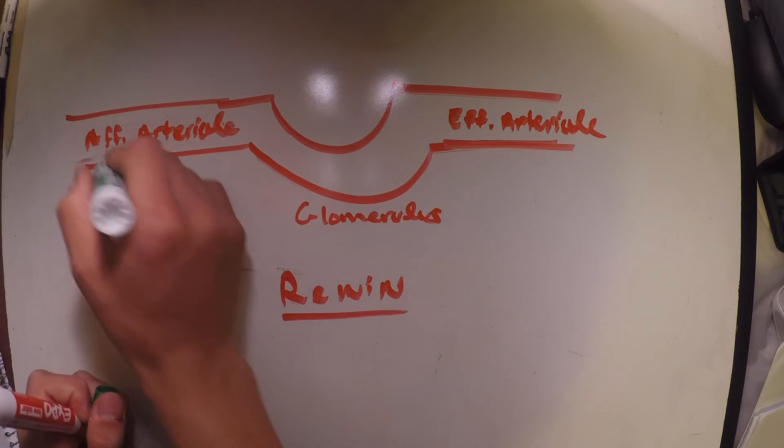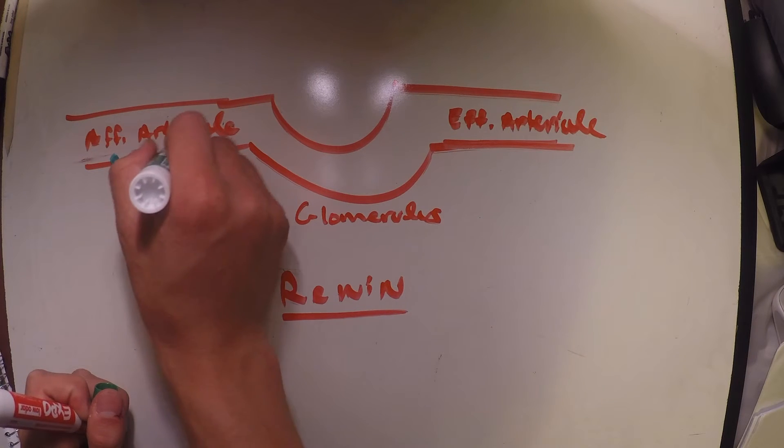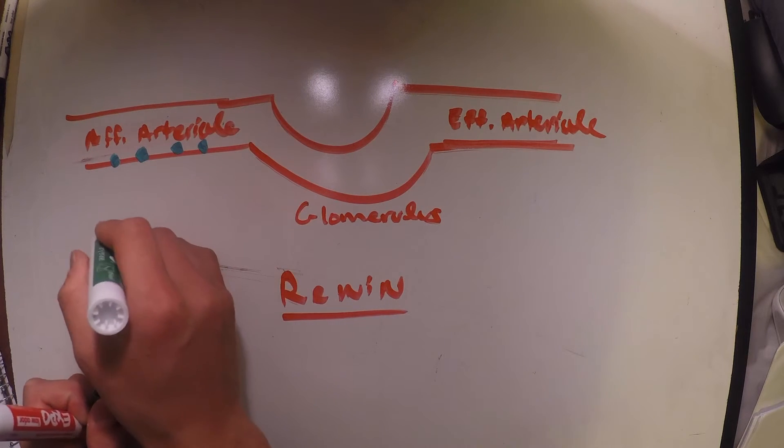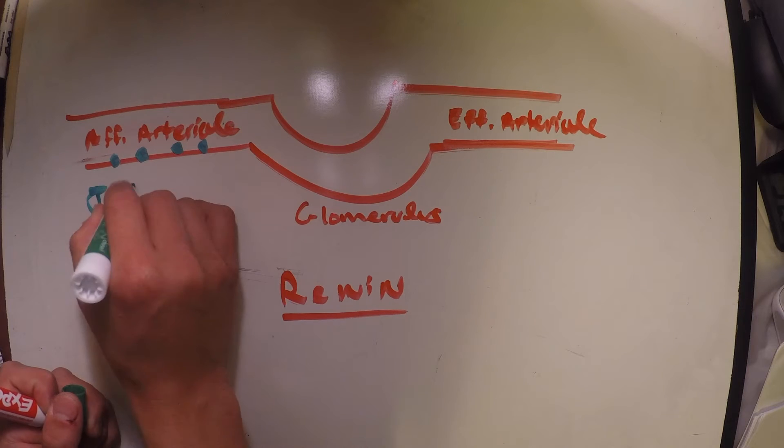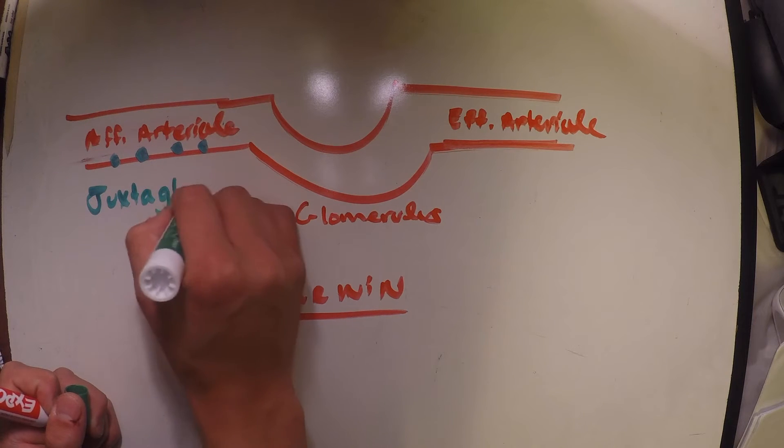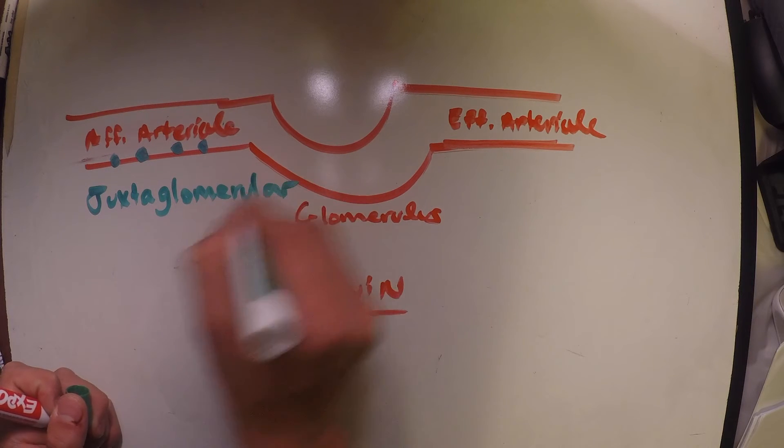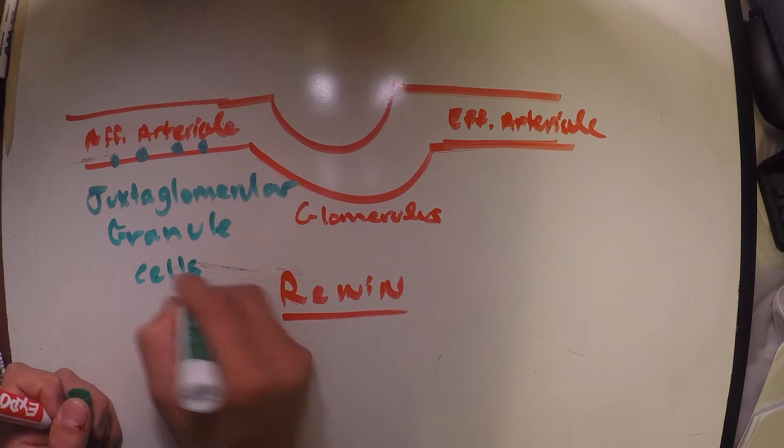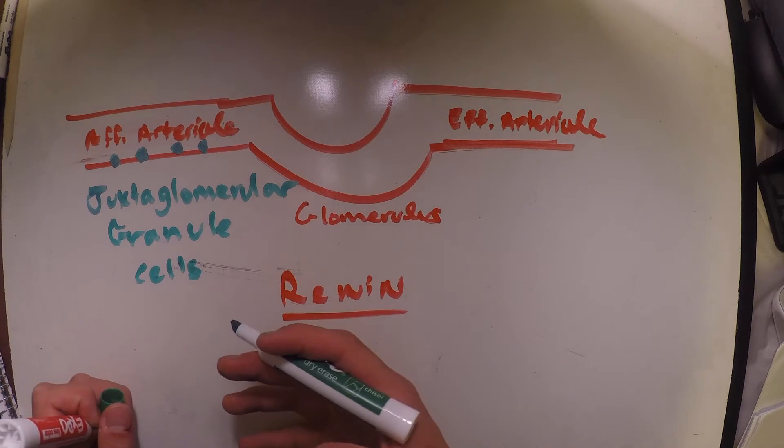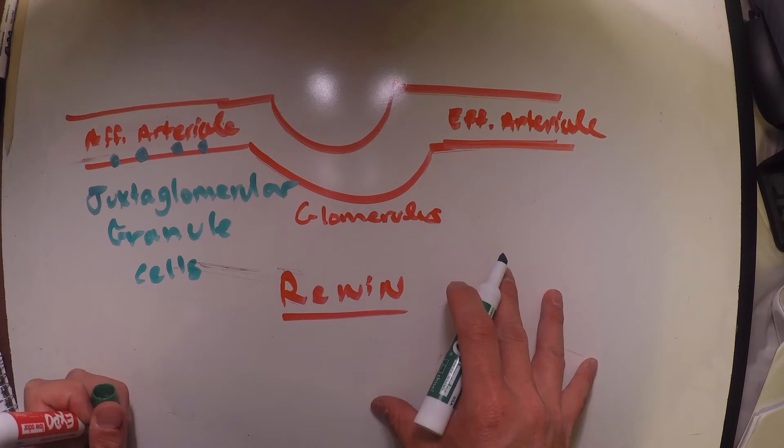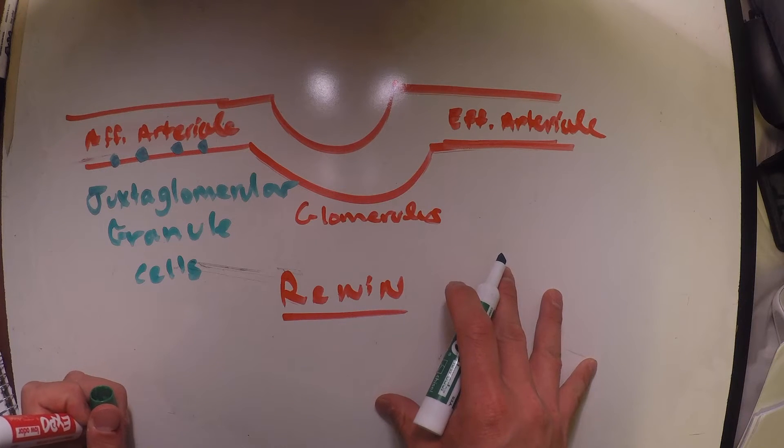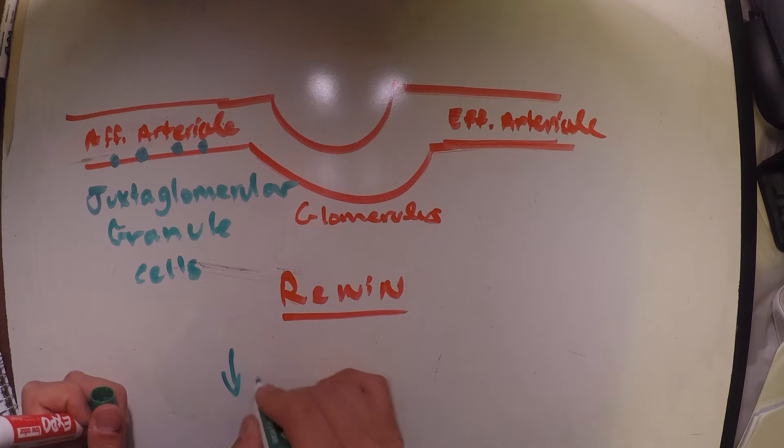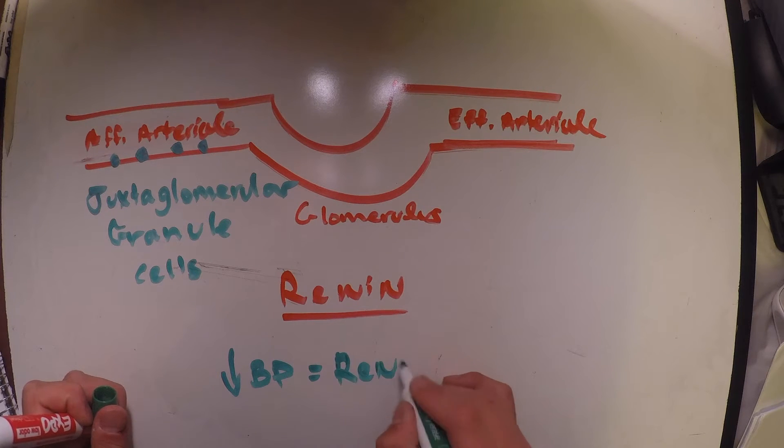What we have sitting in our afferent arterial here are these cells known as juxtaglomerular granule cells. These cells are the ones that recognize when our blood pressure is low. In doing so, we'll release this renin. So with the low blood pressure, we're going to release renin.